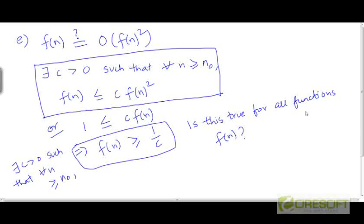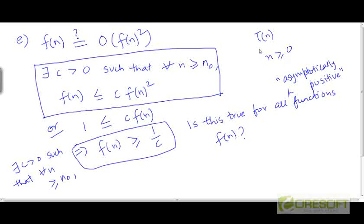Of course, we are assuming here that these functions are asymptotically positive. This is given in the statement of the problem, and it is an assumption we made for our whole discussion on asymptotic notation — where we look at values of n that are non-negative and assume that the values of the function are also going to be non-negative, at least for values of n that are large enough.